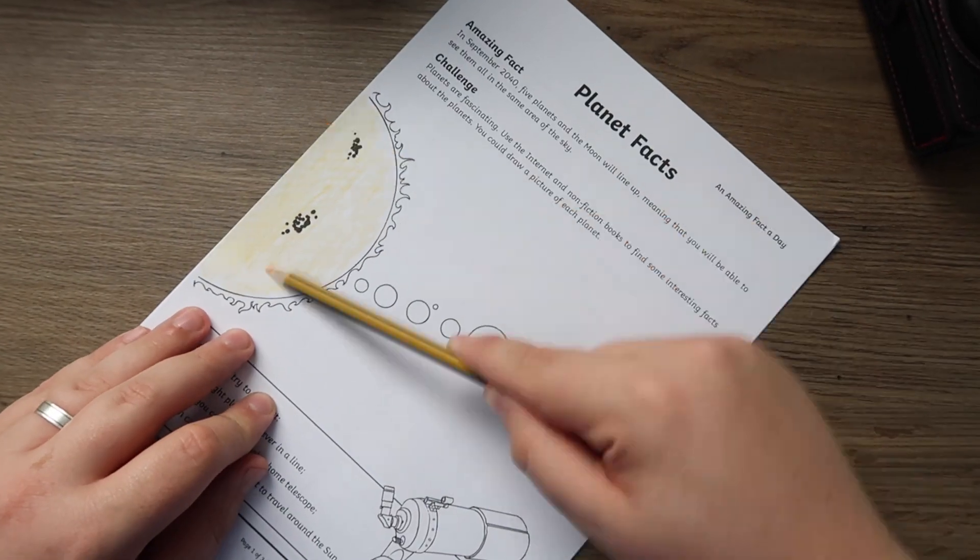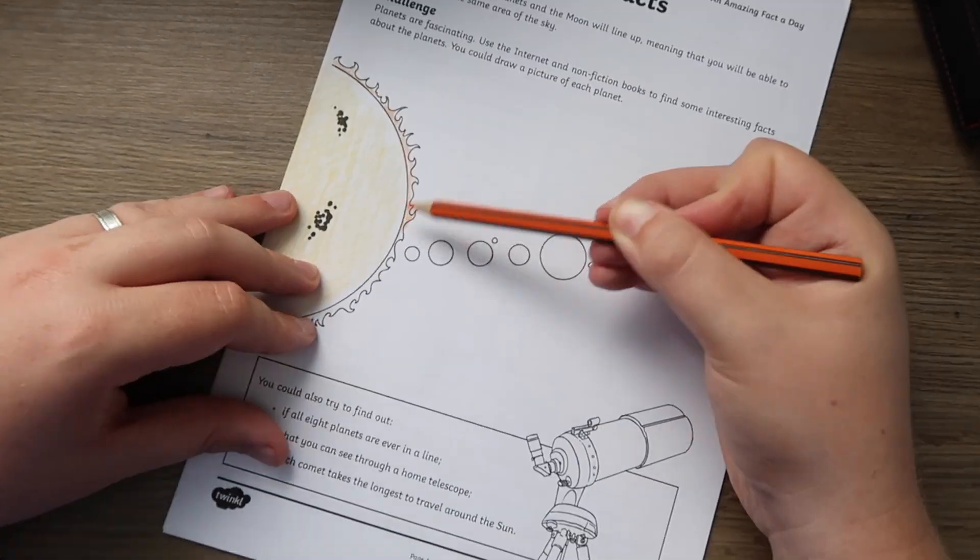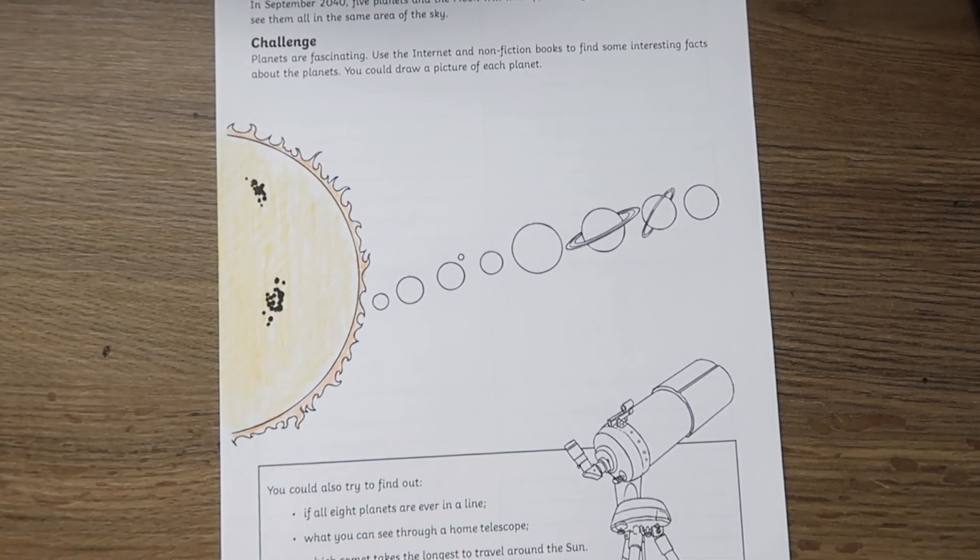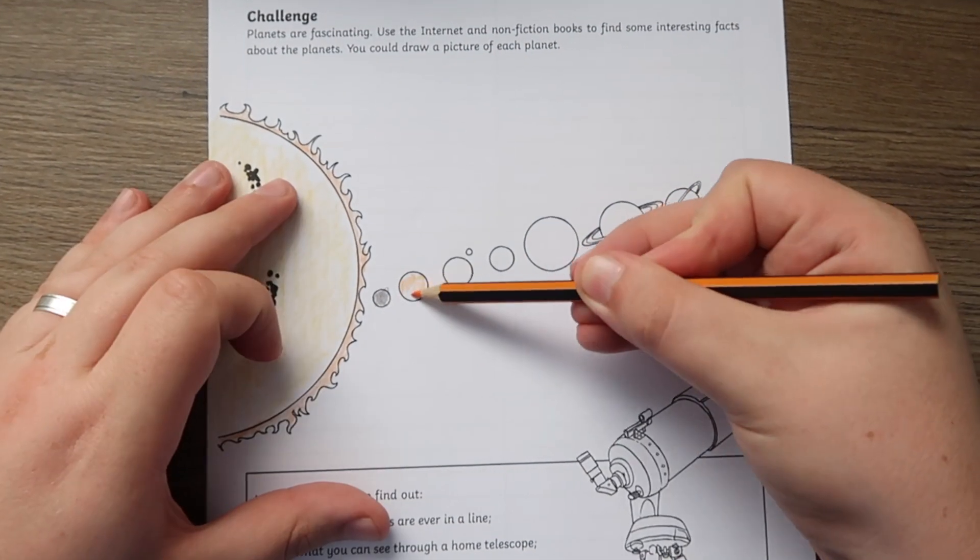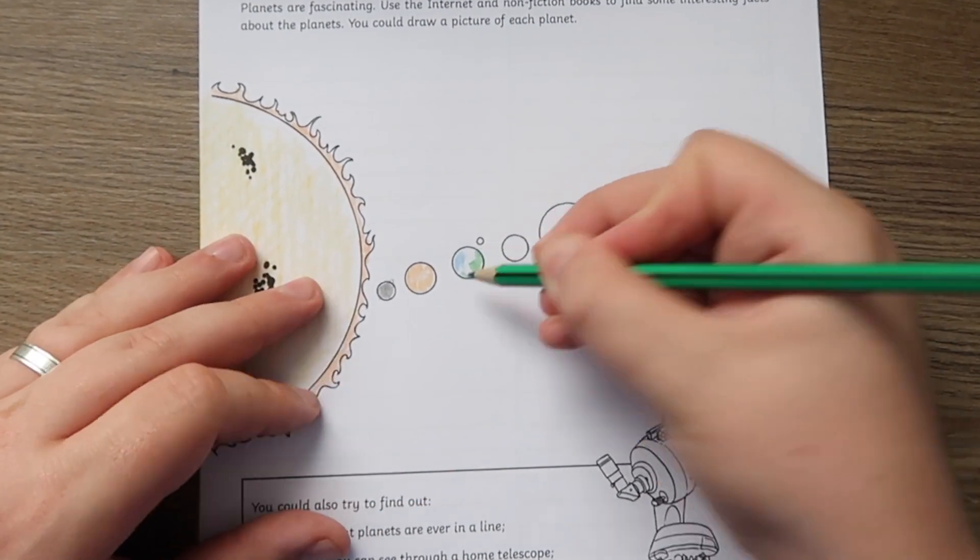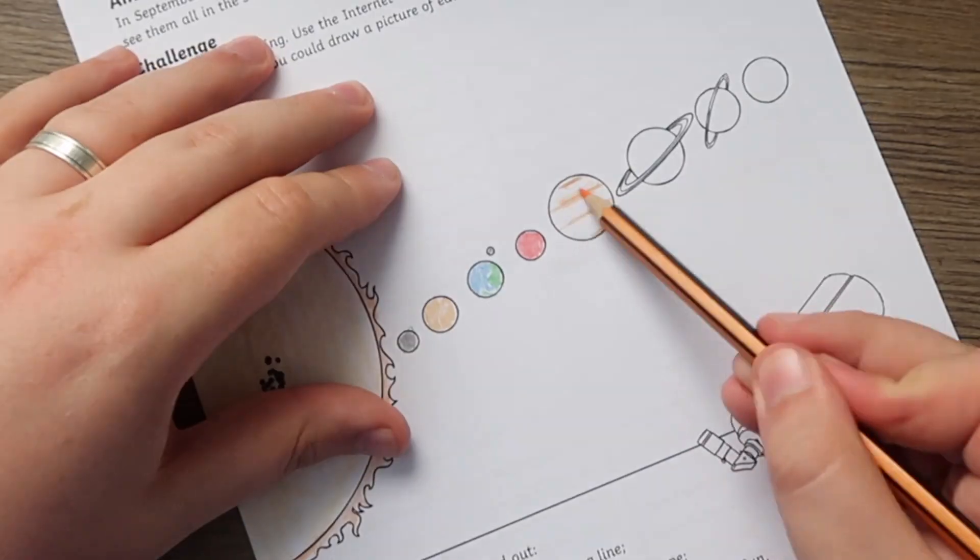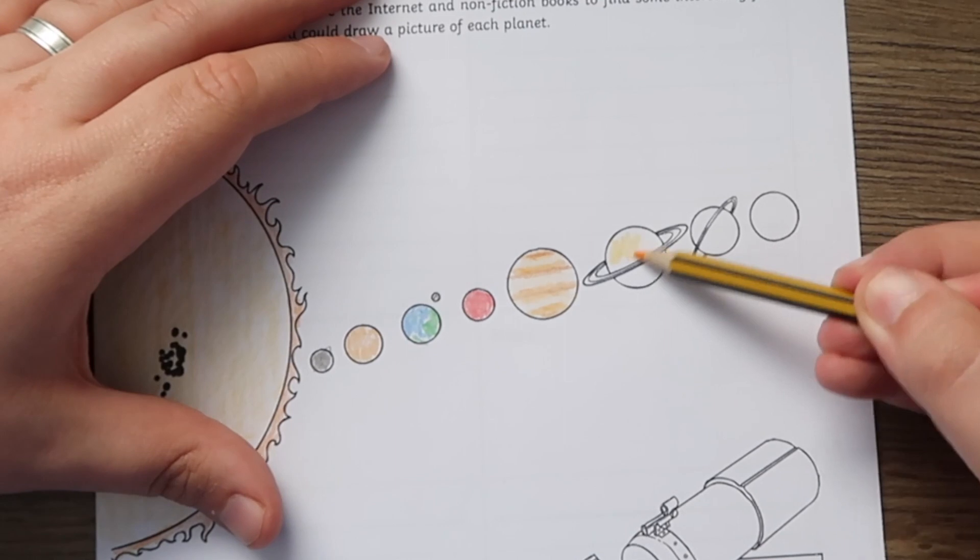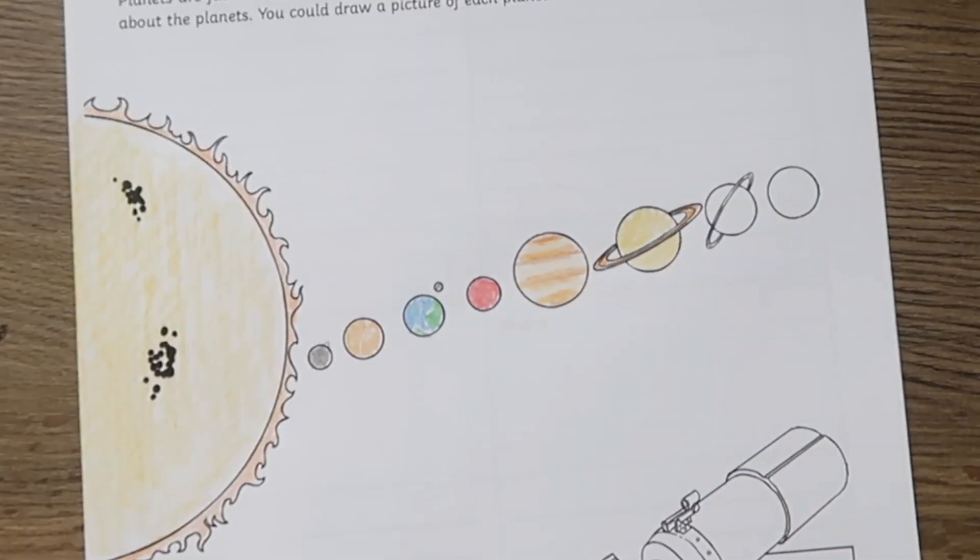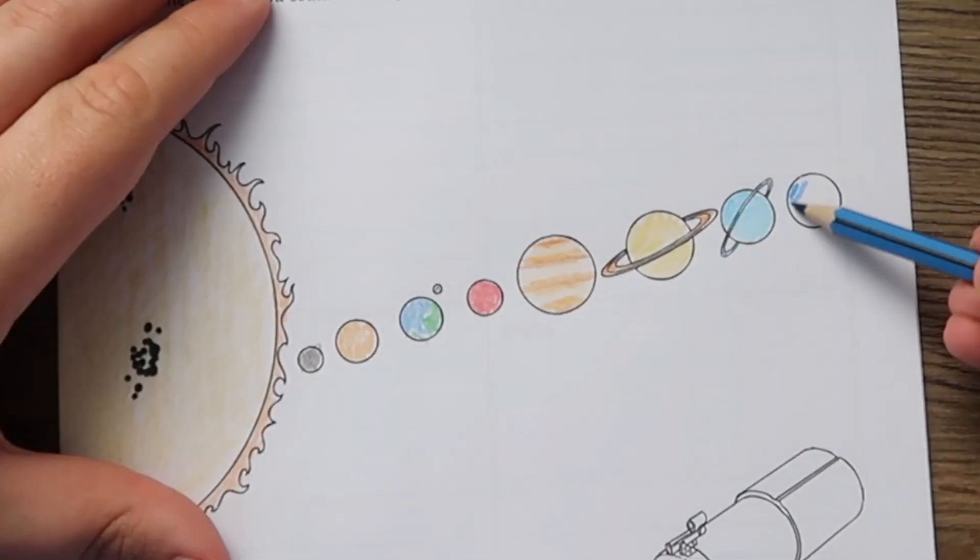The worksheet includes a great cover sheet for the fact file that introduces the planet and also gives the children some extra research ideas for an extension once they've completed this activity. The cover sheet also has a great illustration of all the planets as well as the sun for children to color in once they've completed the task.